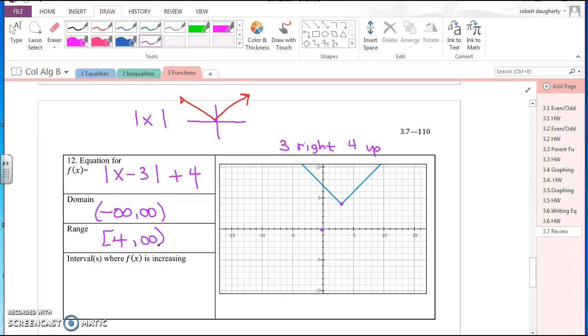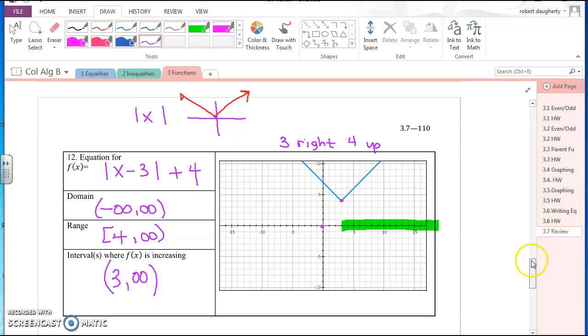Where is this function increasing? This function is increasing over this interval. That's where my function is rising. That interval is 3 to infinity. Intervals of increase and decrease are always parentheses. So that's where the function is increasing.